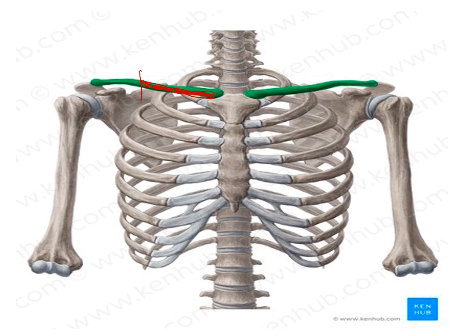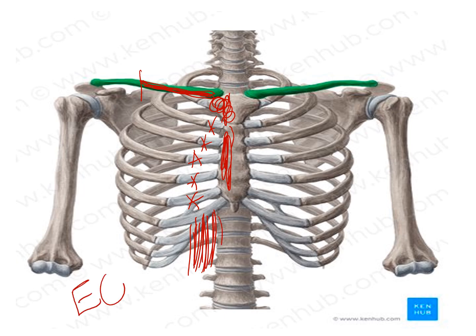The sternocostal head arises from half of the anterior surface of the manubrium, half of the anterior surface of the sternum, and the second, third, fourth, fifth, and sixth costal cartilages. The sternocostal head also arises from the aponeurosis of the external oblique muscle, which is a muscle of the abdomen.